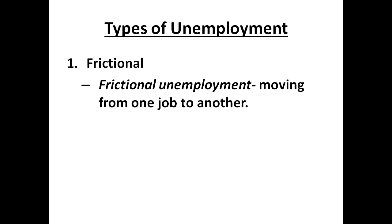The first type of unemployment is frictional unemployment. This kind of unemployment is almost always going to exist — it's just the kind that exists when people are moving from one job to another. If someone quits one job to take another, for a period of time they're going to be considered frictionally unemployed. Or if somebody graduated high school and they're waiting to start their first job, they would also be frictionally unemployed.